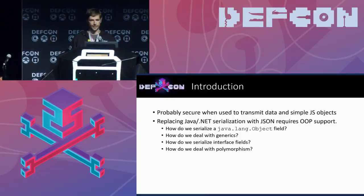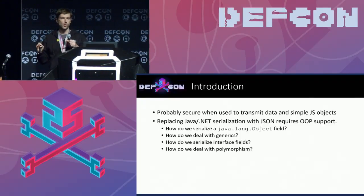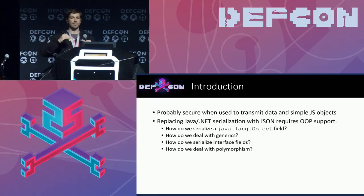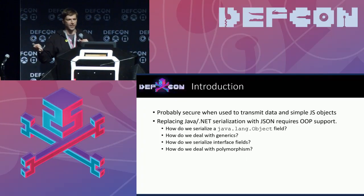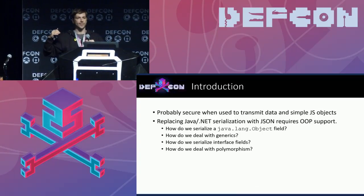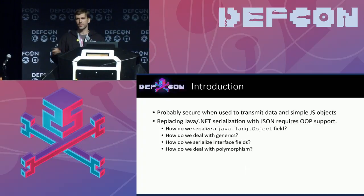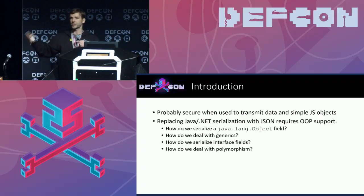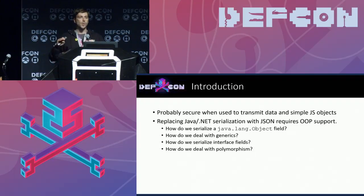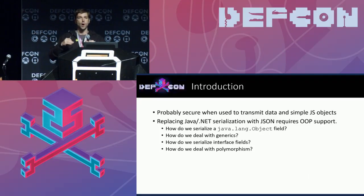Let's jump into the JSON part. We are not talking about JSON when sending simple data or simple JavaScript objects between a JavaScript front end and a controller like a Spring controller. We are talking about replacing Java or .NET serialization with JSON, which means you need to support object-oriented programming features: how to deal with a Java object, a system object in .NET, generic parameterized types, polymorphism, interfaces, and so on. We will be abusing the features these libraries include to support this OOP stuff.